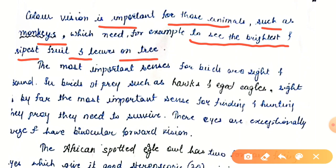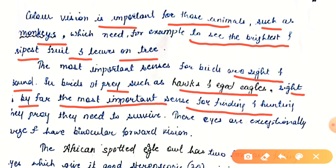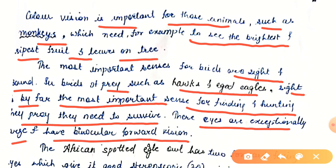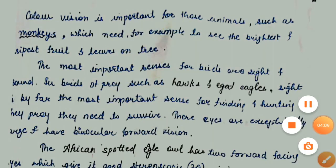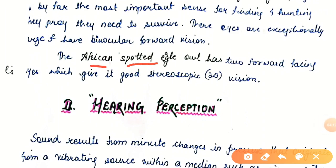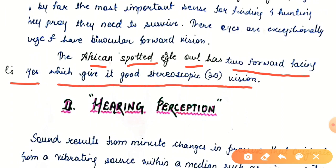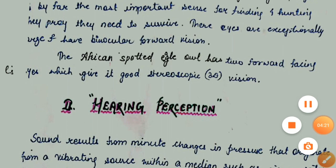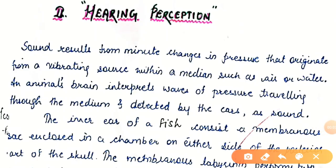The most important senses for birds are sight and sound. In birds of prey such as hawks and eagles, sight is by far the most important sense for finding and hunting prey — their eyes are exceptionally large and have binocular forward vision. A frequently spotted eagle owl has two forward-facing eyes which give it good stereoscopic 3D vision.